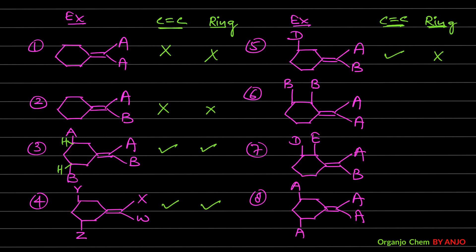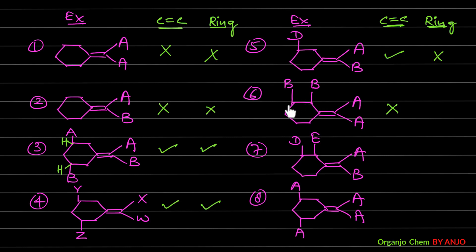Example 6: The SP2 carbon of the C=C has two identical groups, so we don't need to check further — GI from the alkene is not possible. For the cyclic part, one carbon has B and H, and another carbon also has B and H, both being SP3 — the ring GI condition is fulfilled. So example 6 can show GI through the ring.